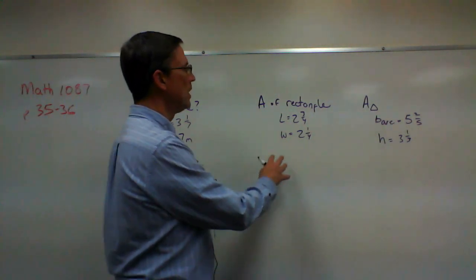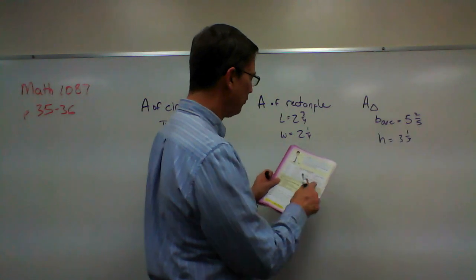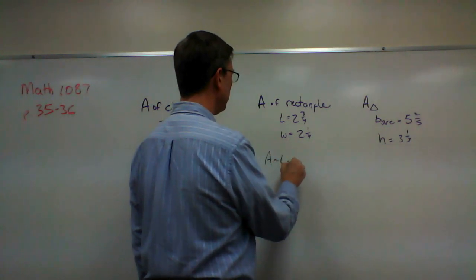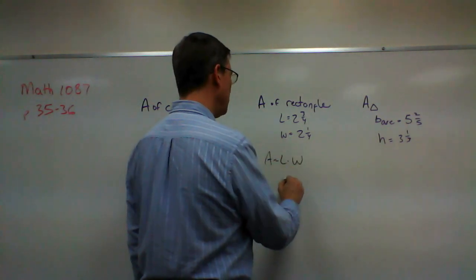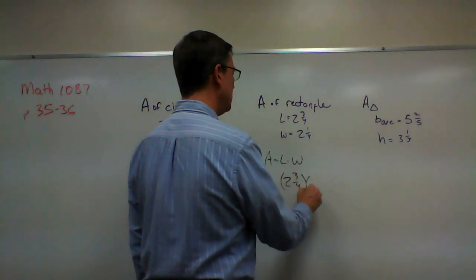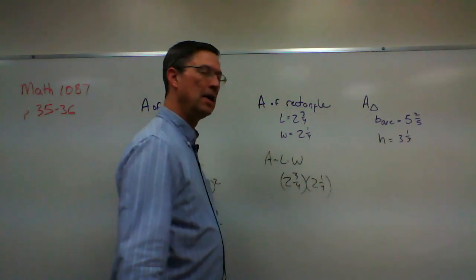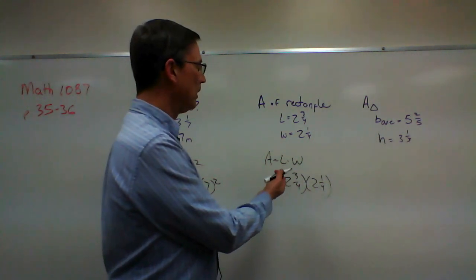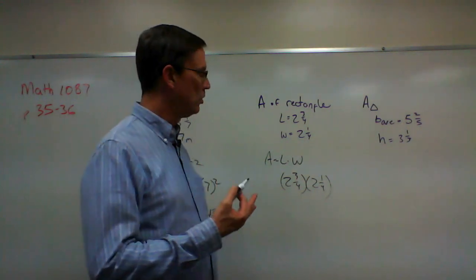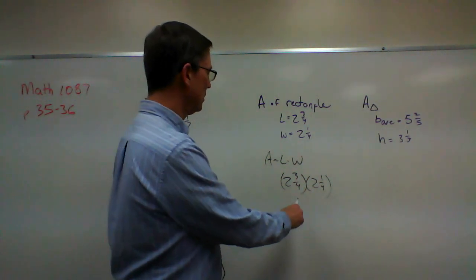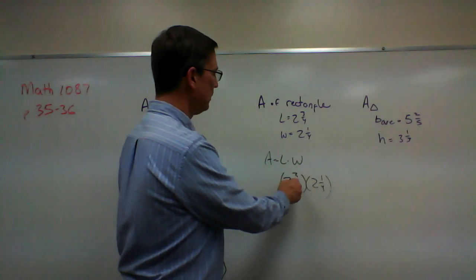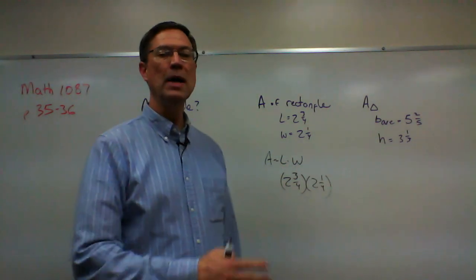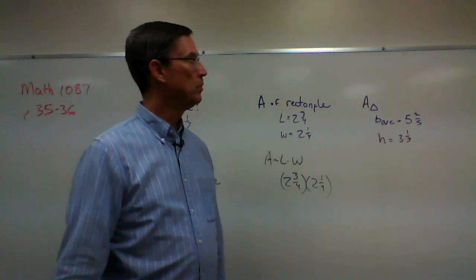Next: area of a rectangle. Looking back at the formulas — area of a rectangle is simply length times width. The length is 2 and 3/4 and the width is 2 and 1/4. This looks complicated because of the fractions, but it's a simple problem. Convert to improper fractions: 8 plus 3 gives 11, so 11 over 4; and 9 over 4. Then multiply straight across, simplify your answer, and you're done.